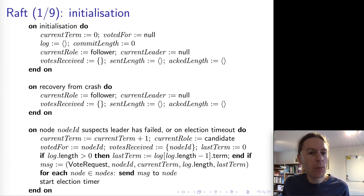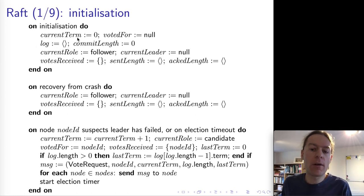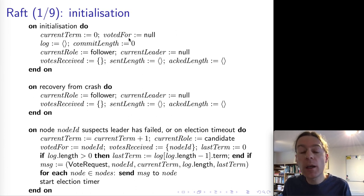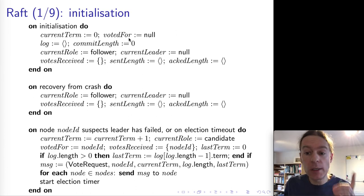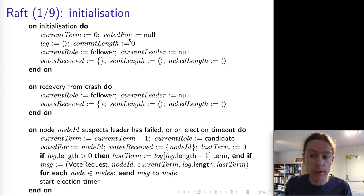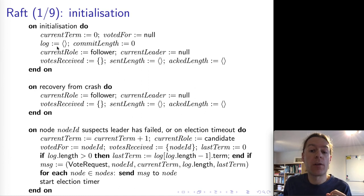The most interesting of these variables is probably the log. First, the currentTerm is just an integer which gets incremented every time a leader election happens. votedFor is to ensure that a node only votes once per term — within a particular term, a node can only cast one vote. Then the log is what is really interesting.